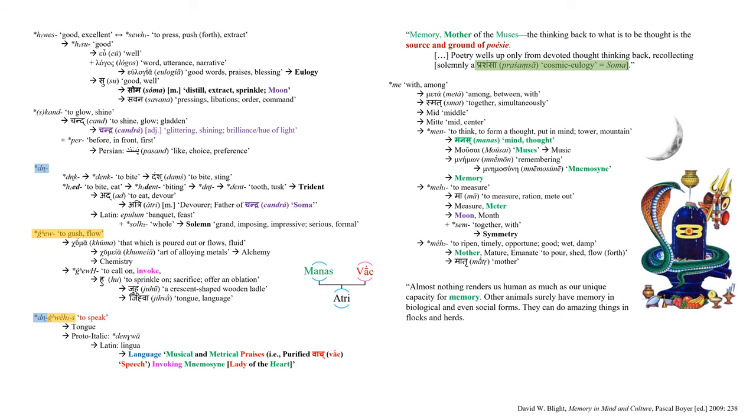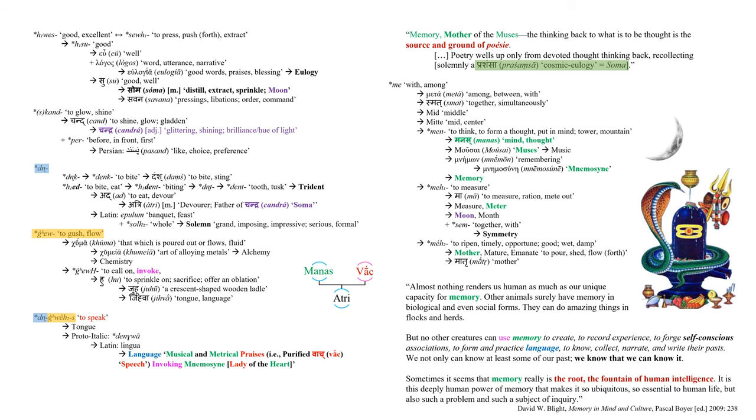But for now, I thought it would be useful to observe some of the same imagery in a eulogy to mnemosyne by contemporary cognitive scientists. As David Blight writes: almost nothing renders us human as much as our unique capacity for memory. Other animals surely have memory in biological and even social forms. They can do amazing things in flocks and herds. But no other creature can use memory to create, to record experience, to forge self-conscious associations, to form and practice language, to know, collect, narrate and write their pasts.